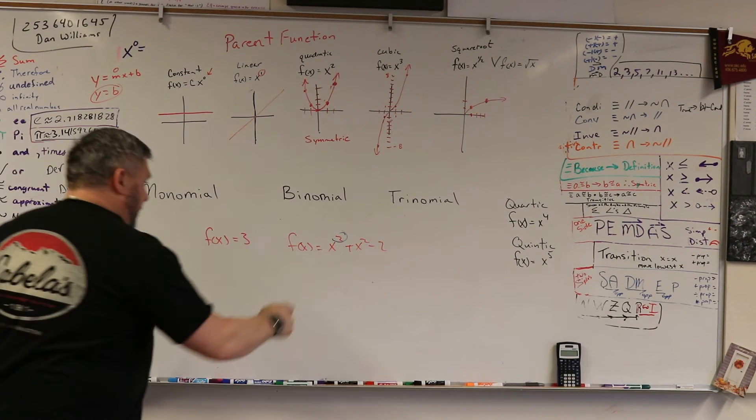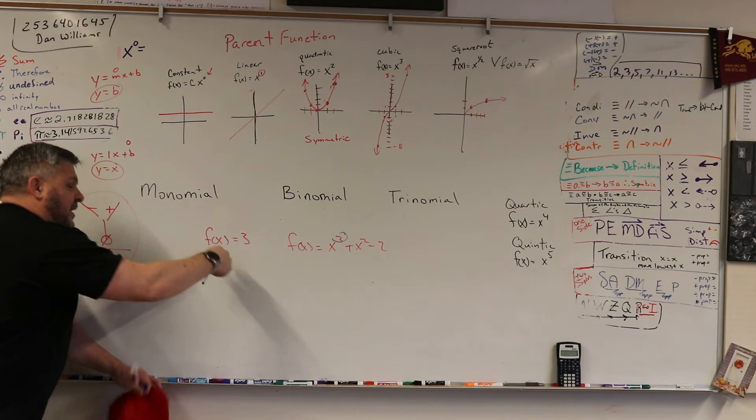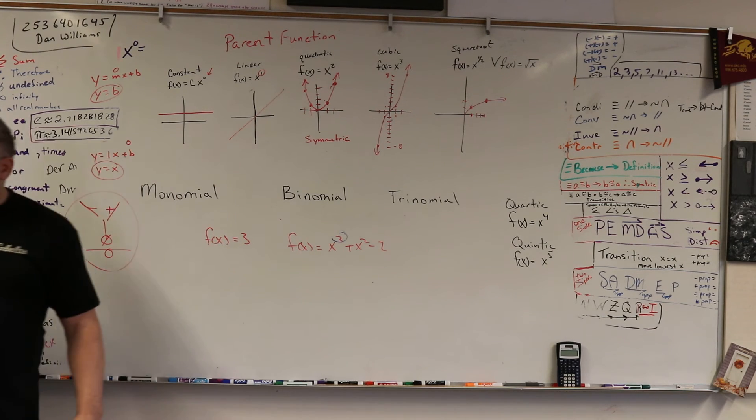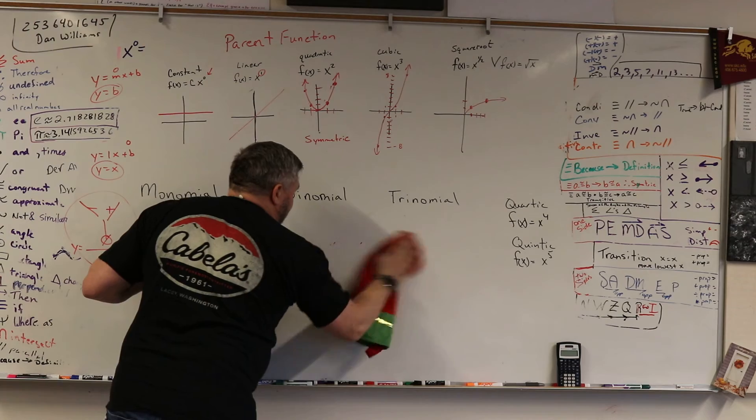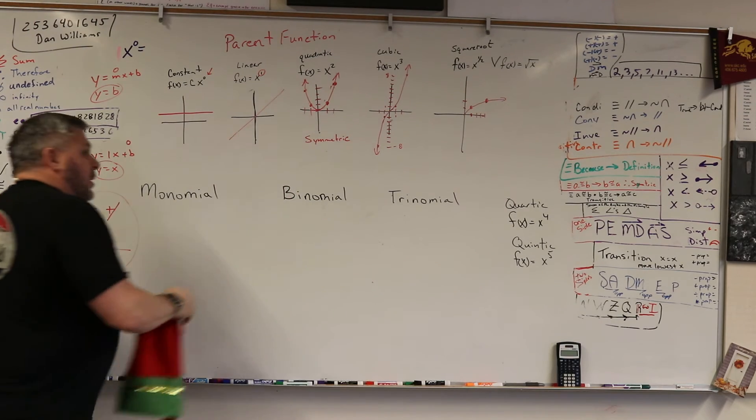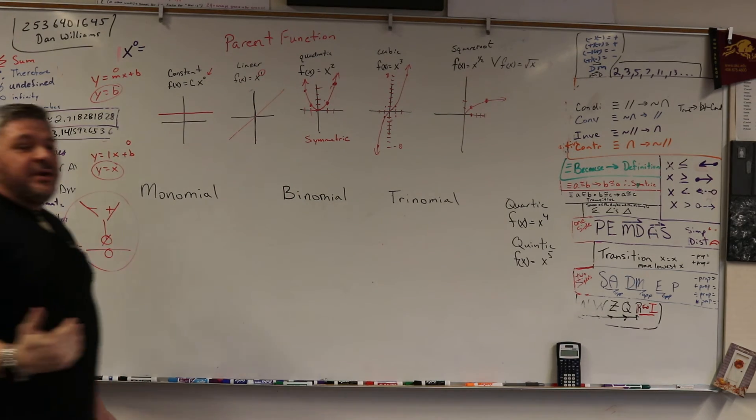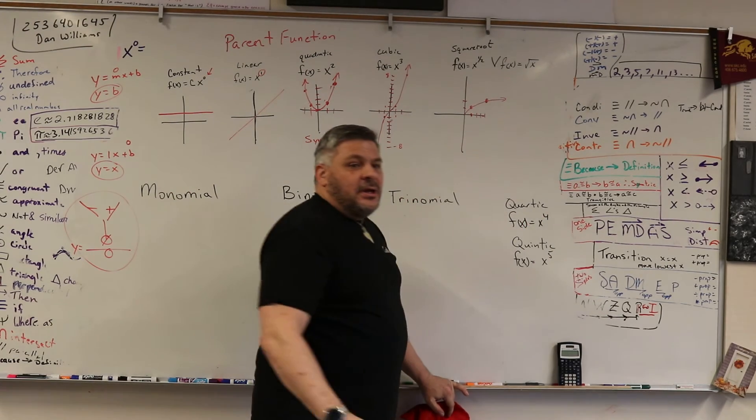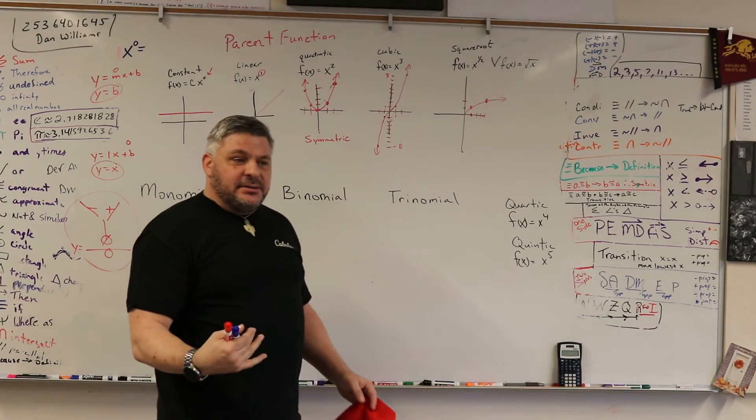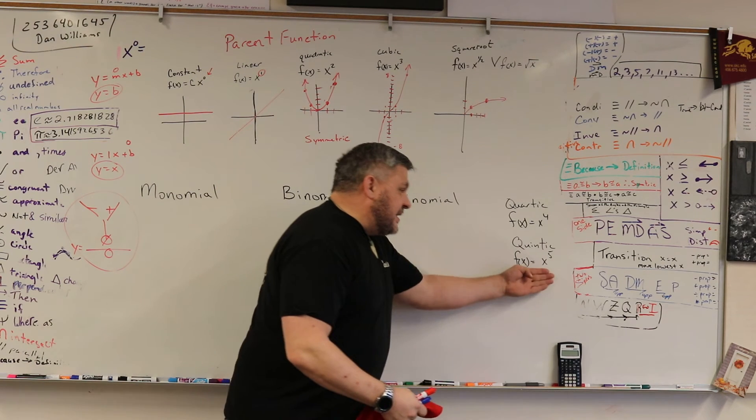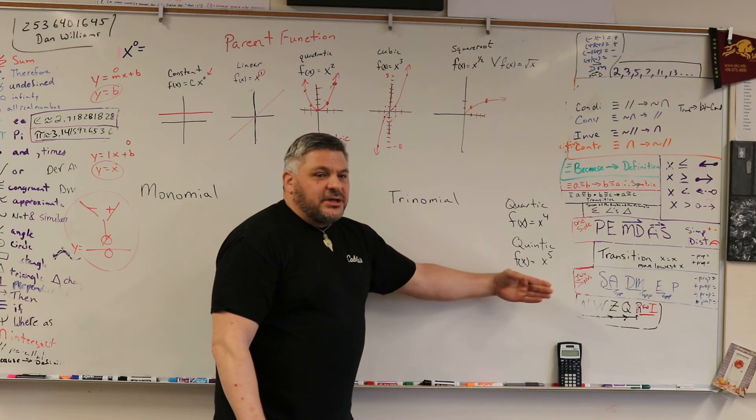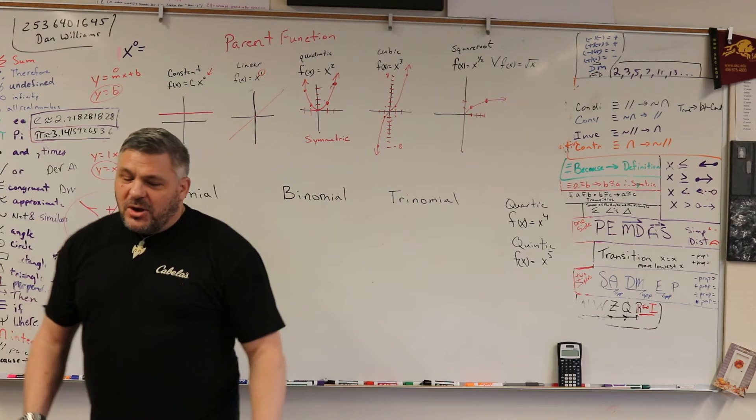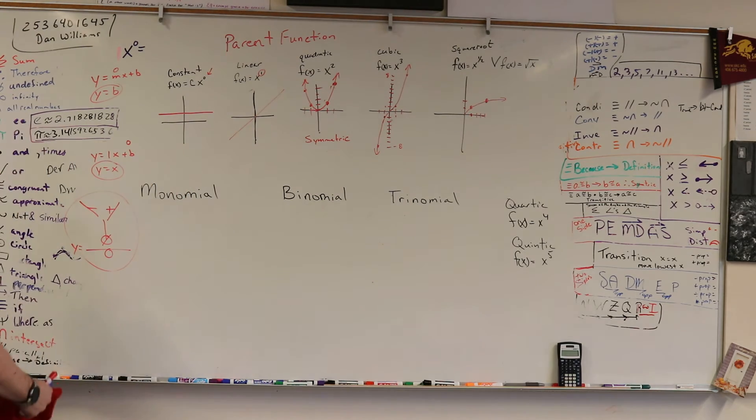Is it a cubic? Is it a constant? Well, let's talk about that. So there's a couple others we want to name. This one, x to the fourth, it's called a quartic. This one, x to the fifth, it's called a quintic.